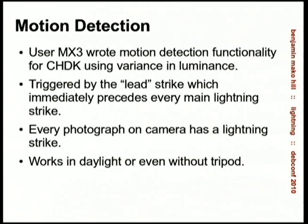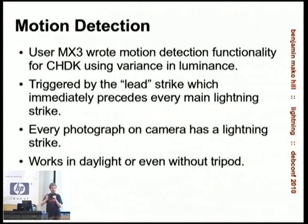The way lightning works is there's almost always a small lightning strike first, and then right after it the big one comes. So if you can capture that first one, the hardware in the cameras — which normally we don't have access to, but with CHDK we can manipulate — lets us take really great lightning photography using very cheap cameras. If you're pointing it at the dark sky, every photograph you take can have a lightning strike on it. It also works in daylight, even handheld.